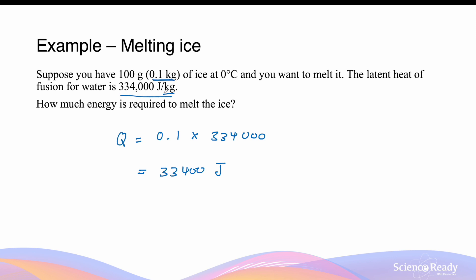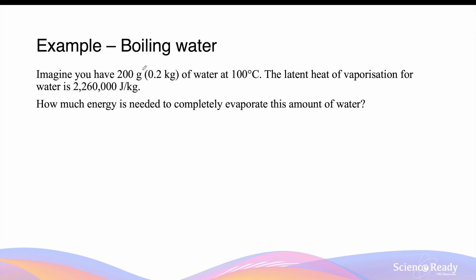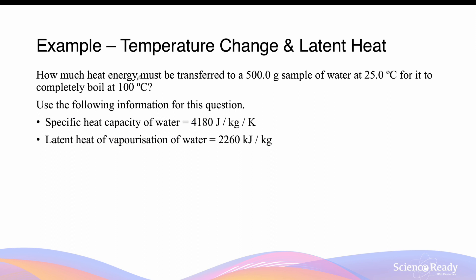In the next example, you have 200 grams, or 0.2 kilograms, of water at 100 degrees Celsius. The latent heat of vaporization for water is 2.26 million joules per kilogram. The energy required to vaporize this amount of water is given by mass multiplied by the latent heat of vaporization, which gives a value of 452,000 joules.